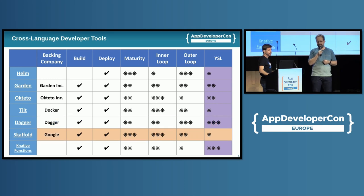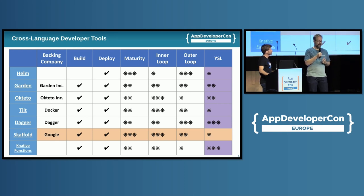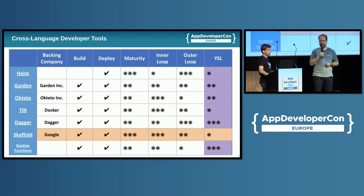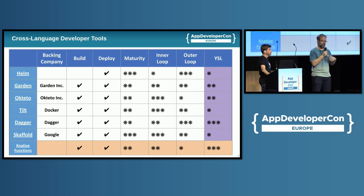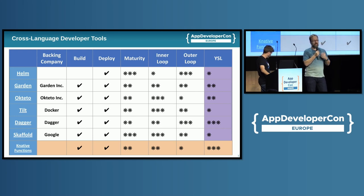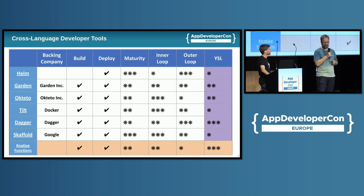Then we have another long-standing tool: Skaffold, which has been around for quite a while. It gives you the ability to build container images without Dockerfiles by leveraging build packs, and then push to the cloud. And something surprising on the list is Knative Functions — a very opinionated way to get your local code on top of Knative, which is a serverless add-on on top of Kubernetes. You can learn more about Knative Functions in the Knative Maintainer session on Friday.